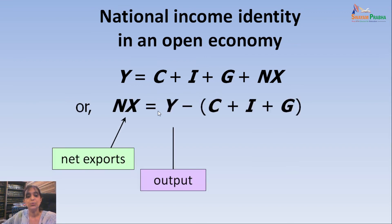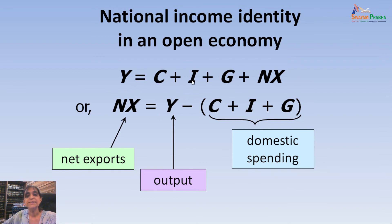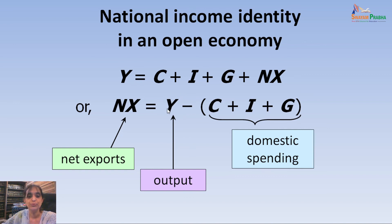We will rearrange this equation: take C and G from the right-hand side to the left-hand side. So it will become Y minus C minus G equals net exports plus investment. This Y minus C minus G, when C plus I plus G together we can call domestic spending, represents the difference between total output Y and domestic spending. Using this identity, net exports equals output produced minus the spending done — showing the interaction of the domestic economy with the rest of the world.